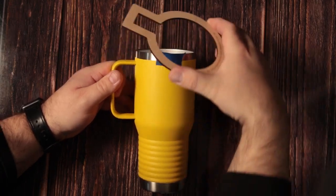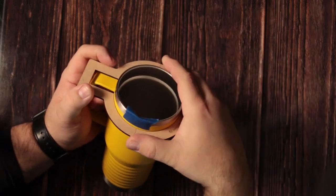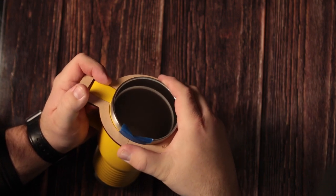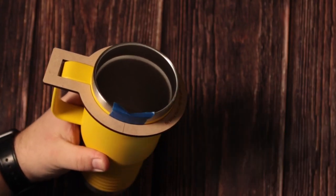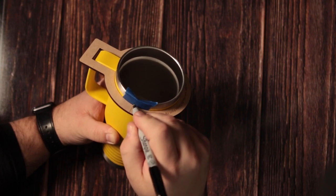Then we take our little guide, our little jig, whatever you want to call it, we place it over the top of the travel mug kind of around the handle and then we just use the marks on the guide for a reference.